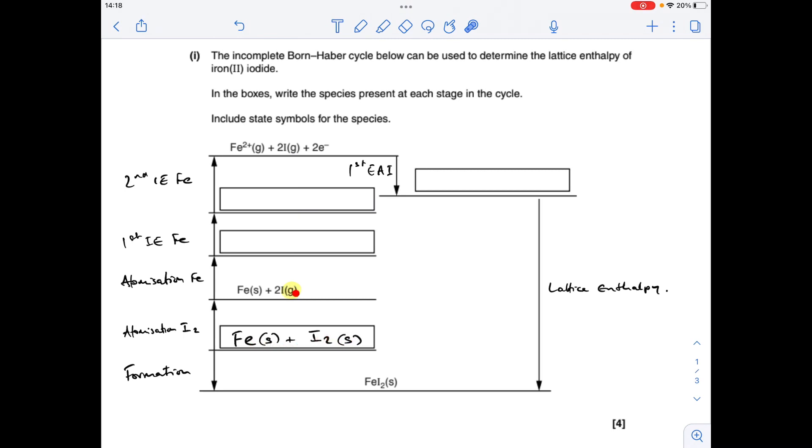You'll have noticed that I've highlighted the gas state symbol here, and that's because this process is actually the atomisation of the iodine. Remember, we're starting with the solid element. We're going to the gaseous atoms. So that's the atomisation of I2. And therefore, this process here is the atomisation of the Fe. So that means at that stage, we've got Fe gas plus 2I gas.